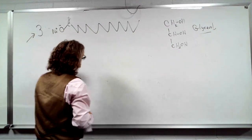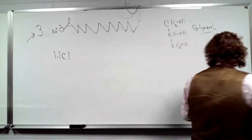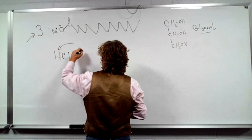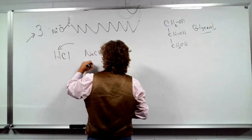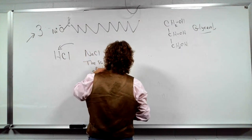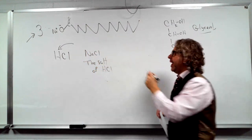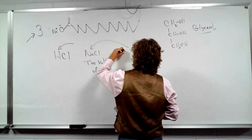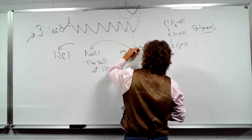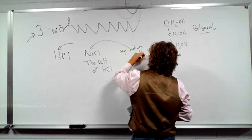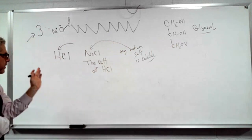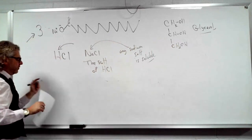If you have HCl, that's hydrochloric acid. If you replace the acidic hydrogen with sodium, you get NaCl — that is the salt of hydrochloric acid. Any sodium salt is soluble — any sodium salt is going to dissolve in water.